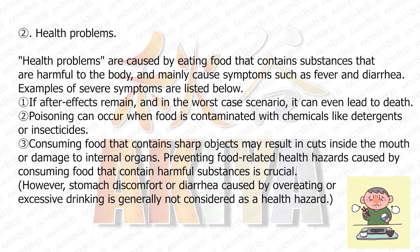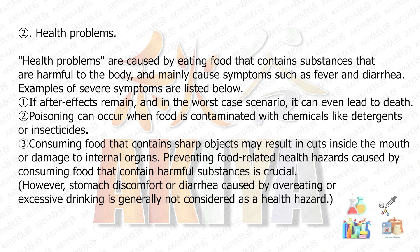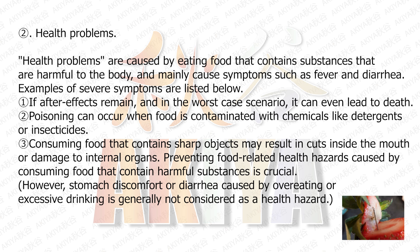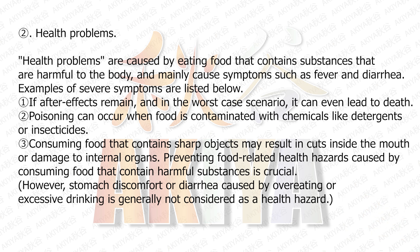2. Health problems are caused by eating food that contains substances that are harmful to the body, and mainly cause symptoms such as fever and diarrhea. Examples of severe symptoms are: 1. If after-effects remain, and in the worst-case scenario, it can even lead to death. 2. Poisoning can occur when food is contaminated with chemicals like detergents or insecticides. 3. Consuming food that contains sharp objects may result in cuts inside the mouth or damage to internal organs. Preventing food-related health hazards caused by consuming food that contains harmful substances is crucial. However, stomach discomfort or diarrhea caused by overeating or excessive drinking is generally not considered a health hazard.